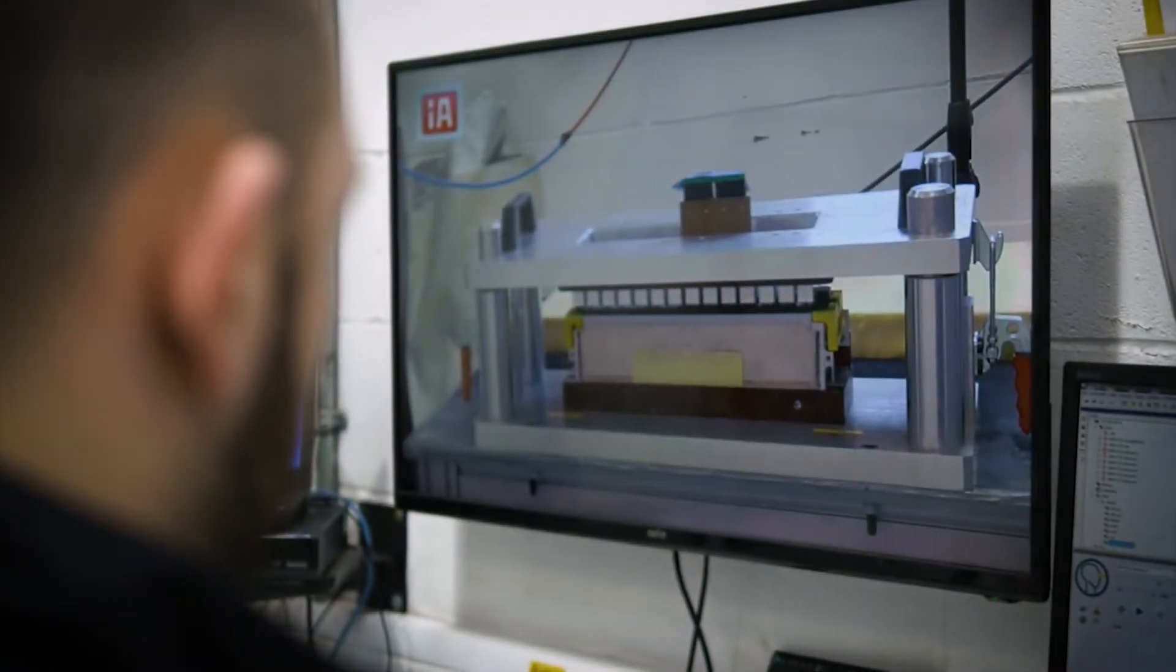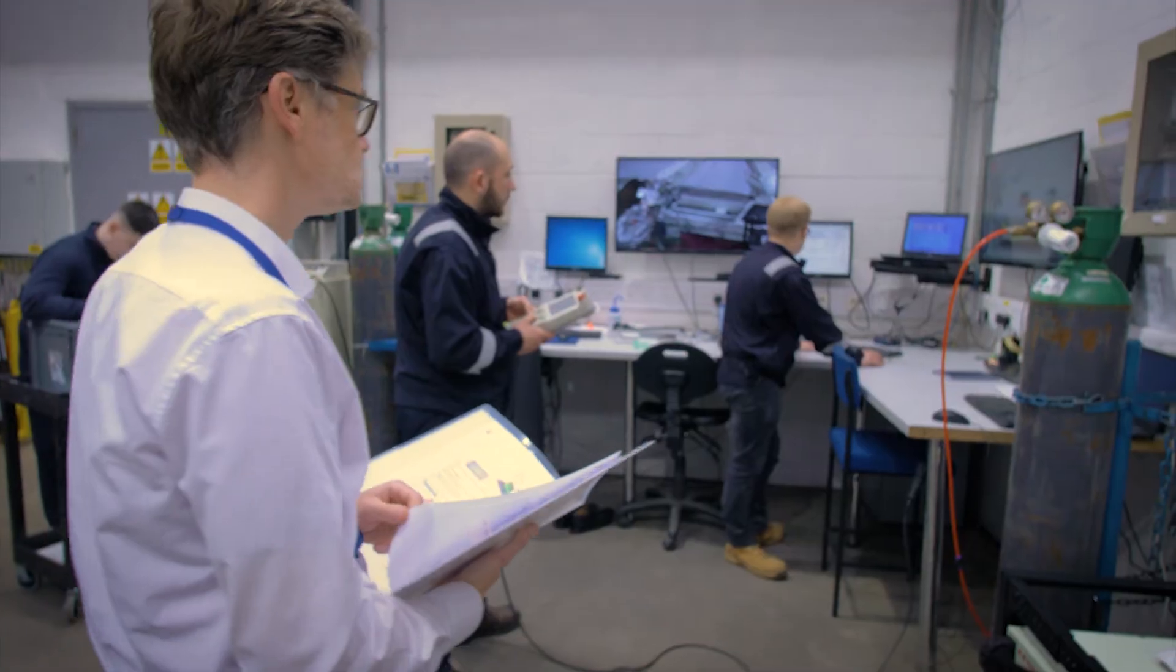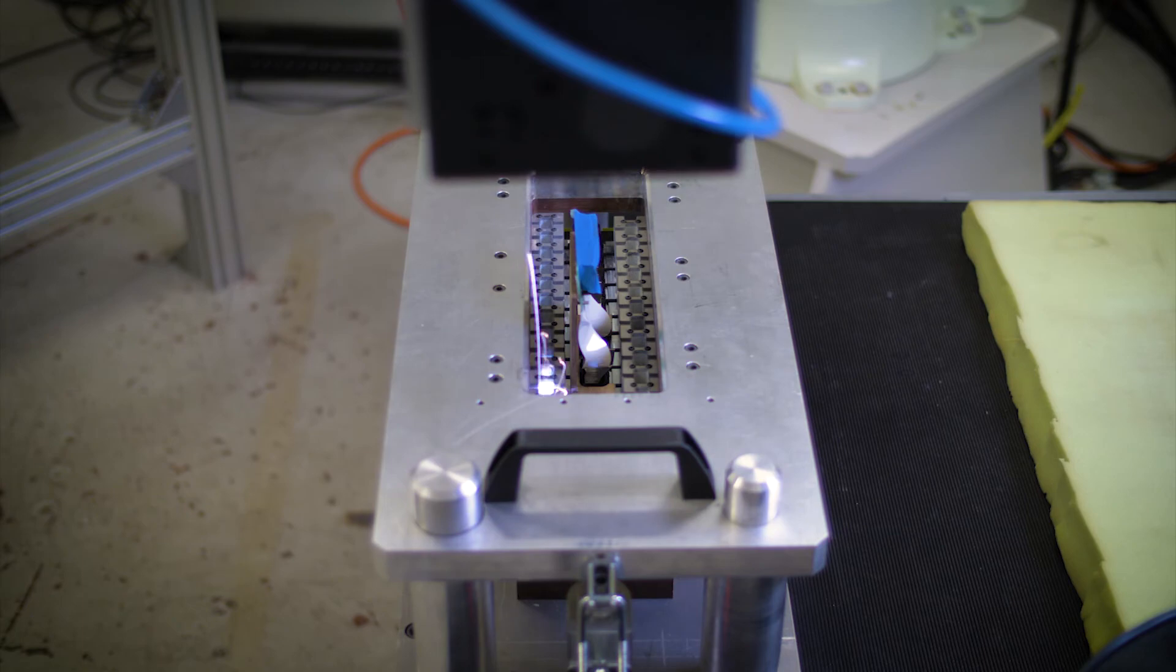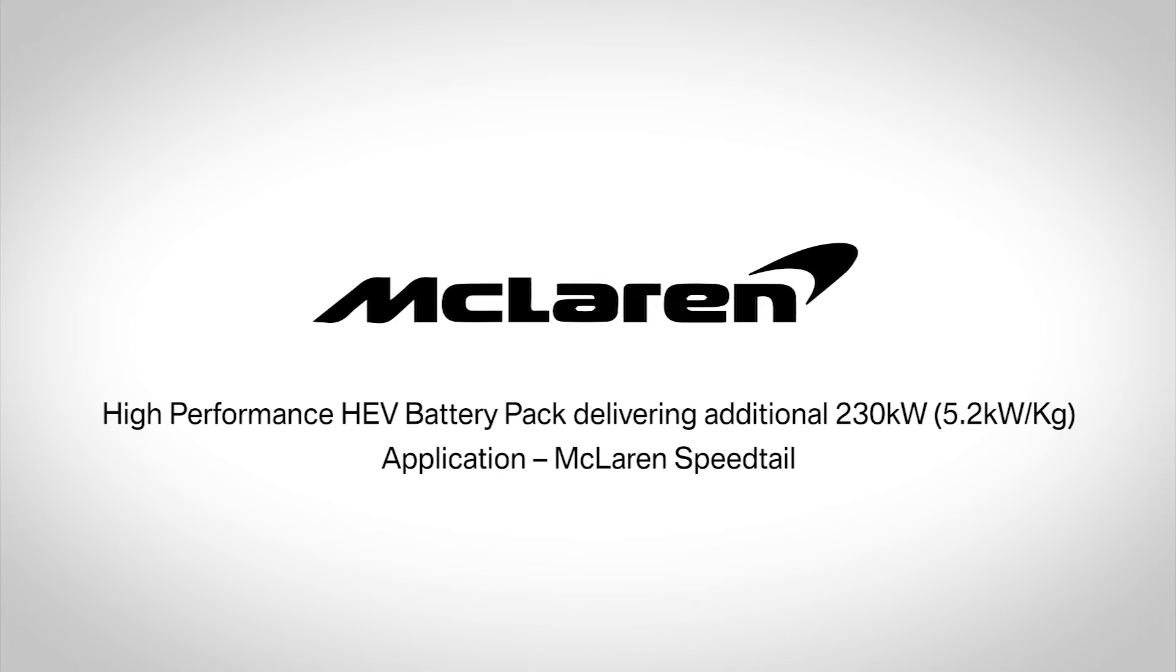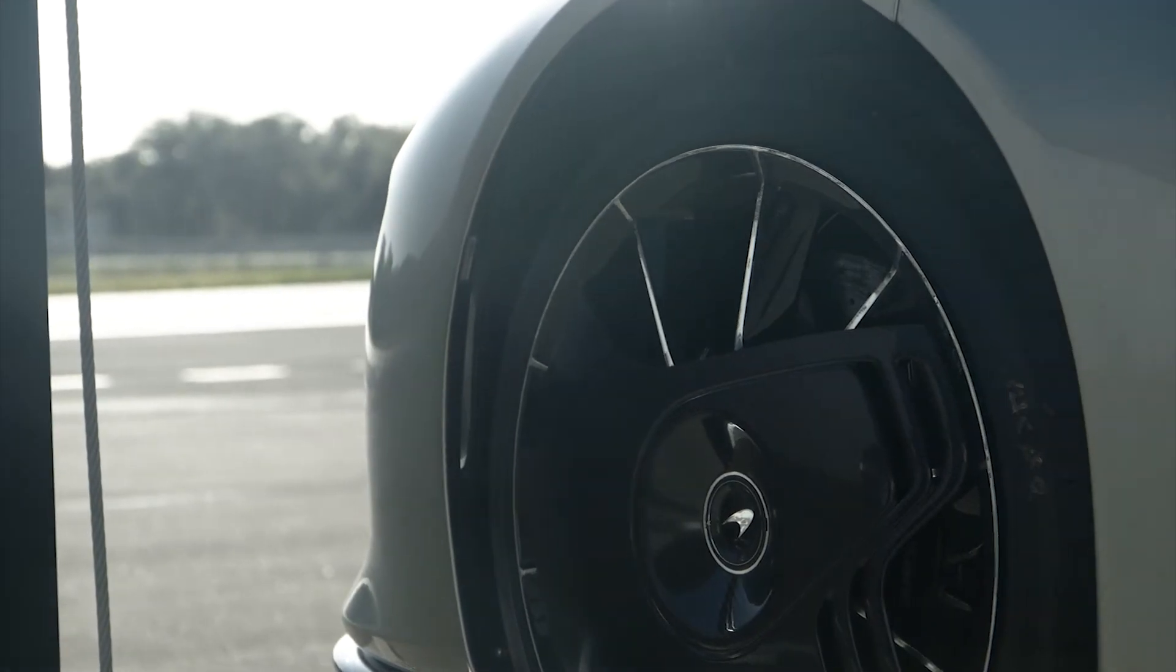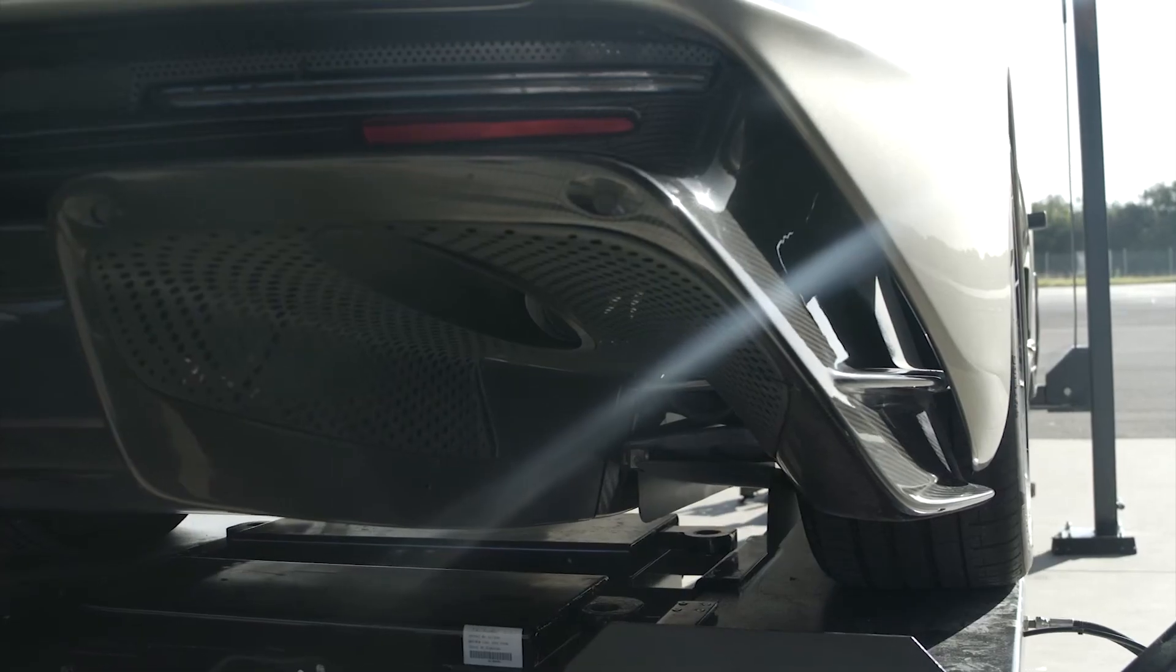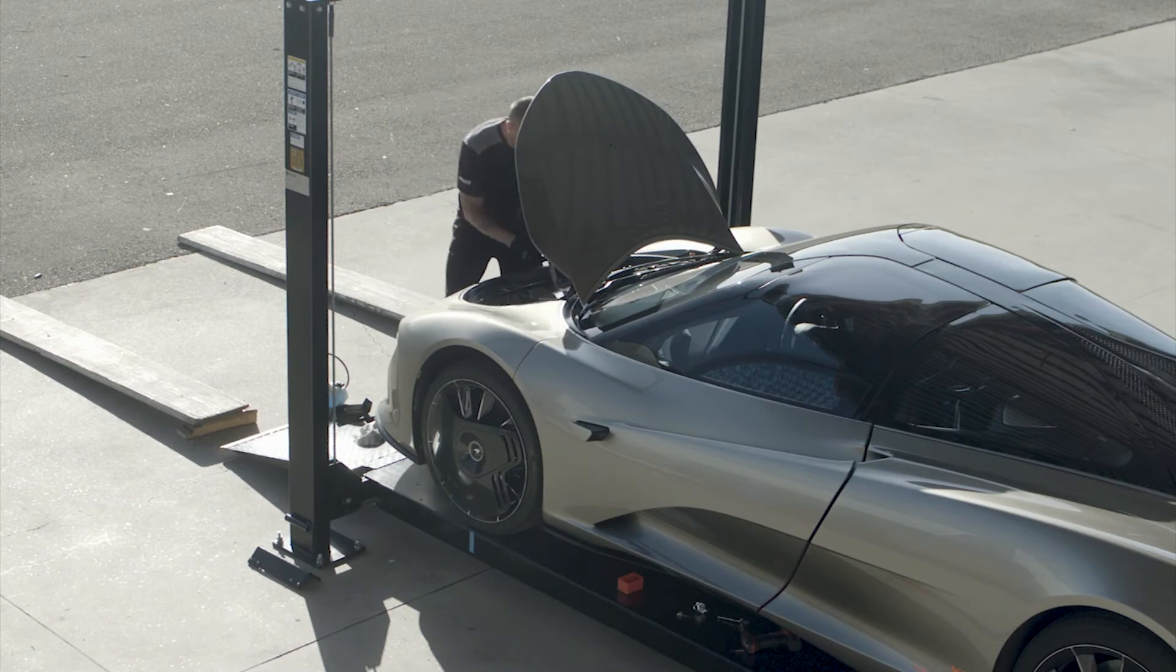When we started with the APC6 program we intended to deliver one battery system for multiple architectures but it turned out that we delivered three individual products at the end. Let's start with the McLaren Speedtail program. The project target was to deliver a battery pack that delivers five kilowatt per kilogram.